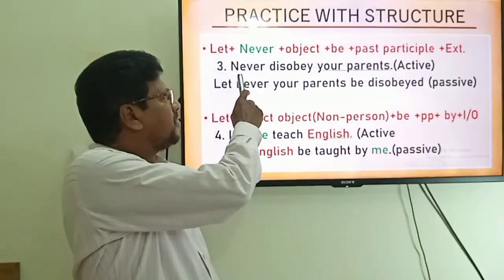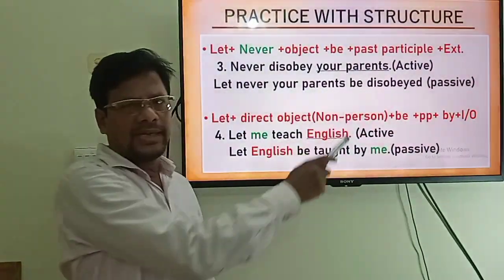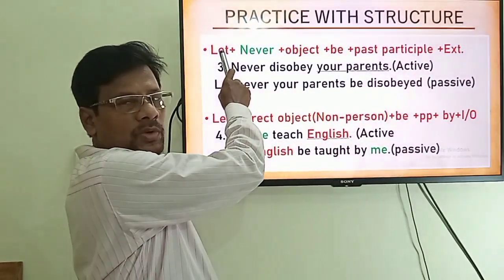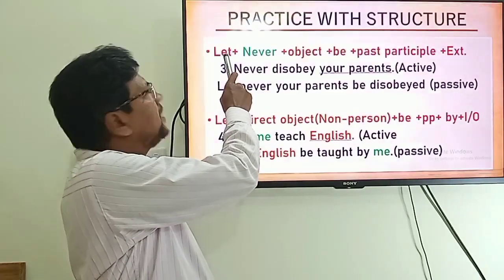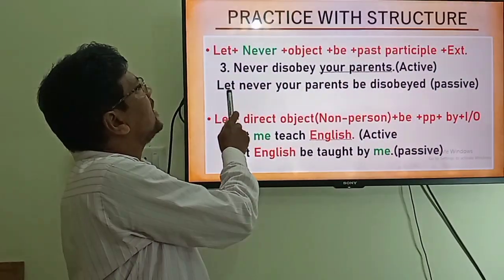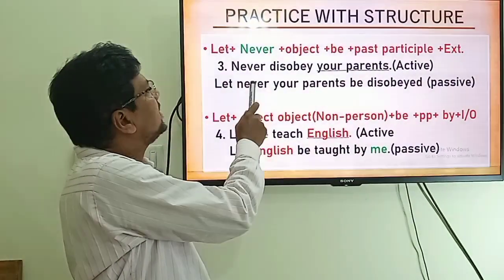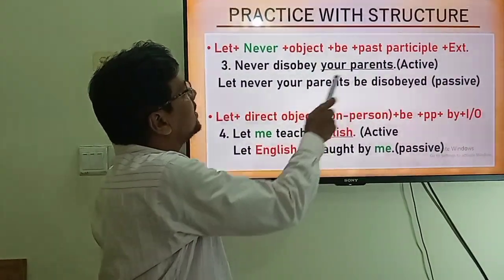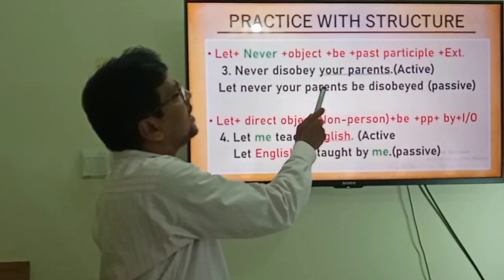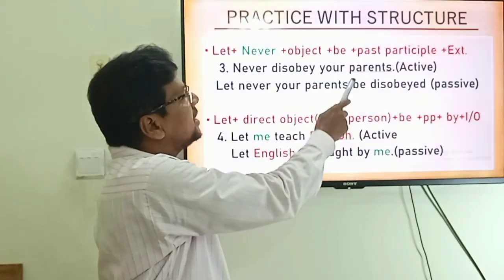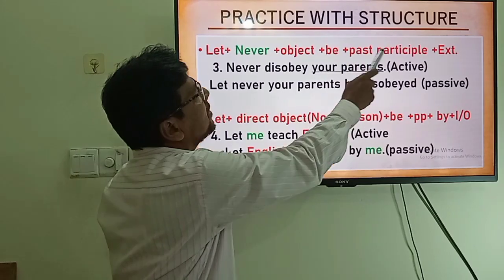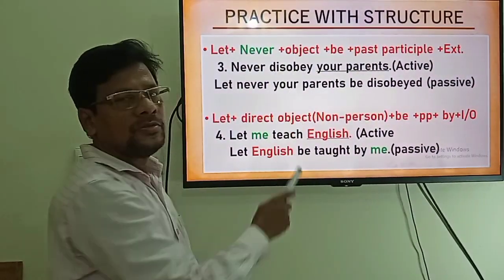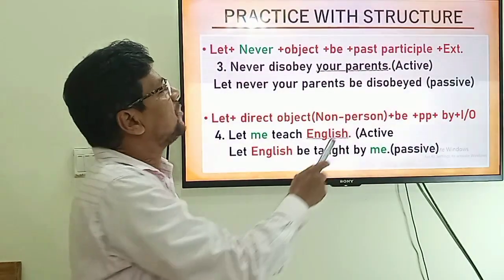Number three: 'Never disobey your parents' — that is active voice. The rule for changing to passive: Let + never + object + be + past participle. So: Let + never + object 'your parents' + be + past participle 'disobeyed'.